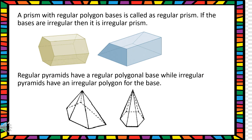The polygons can be regular. Regular polygons are polygons which are equiangular and have equal sides. Similarly, if a prism has a regular polygon as the base, then the prism will be a regular prism, whereas if it has an irregular polygon as the base, then it will be an irregular prism. Similarly, pyramids can also be regular or irregular.